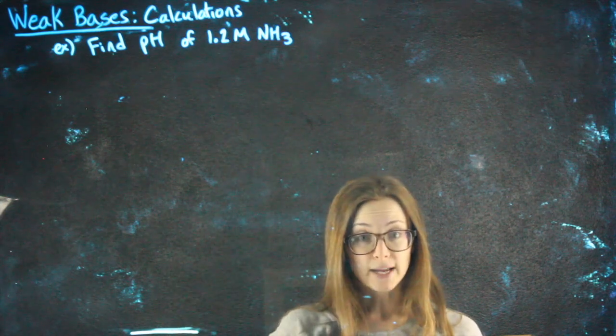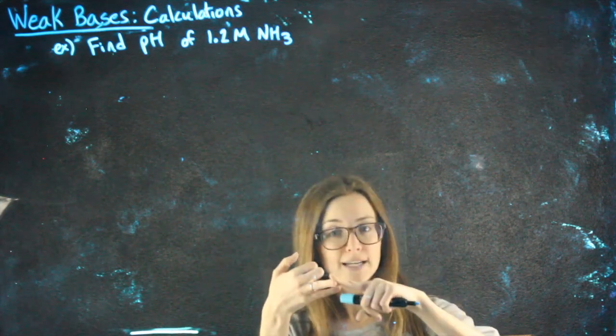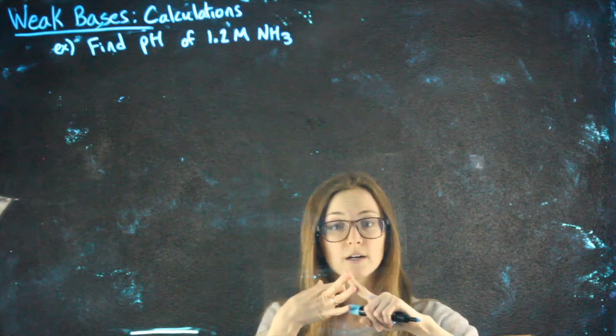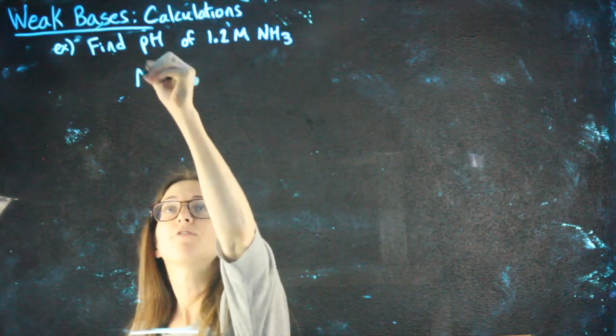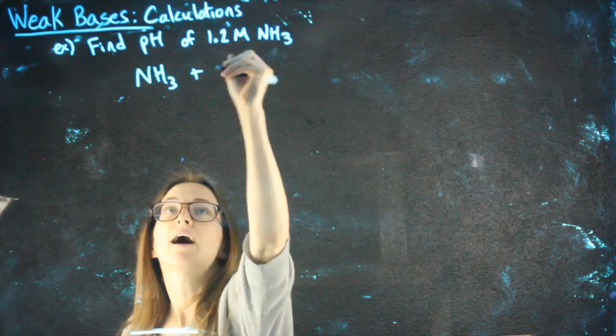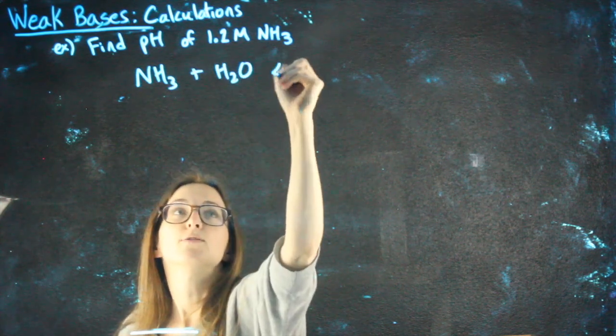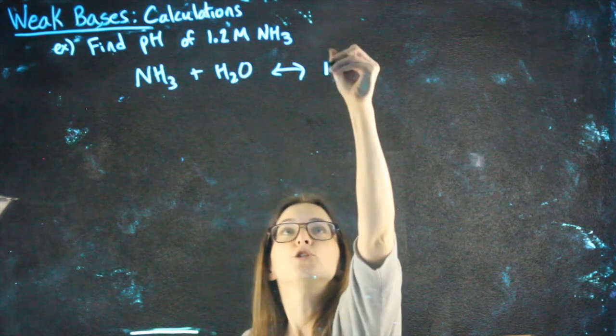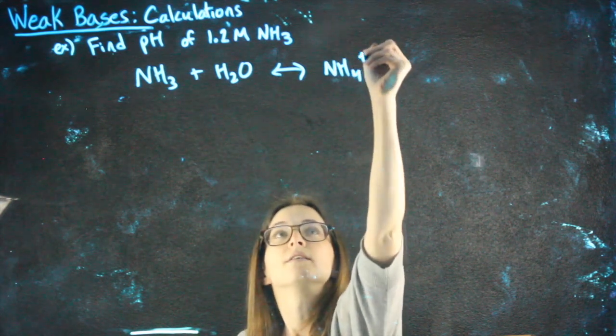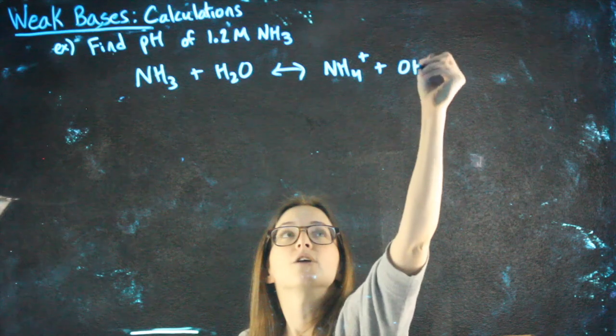Same things we would do with weak acid: dissociate, ICE chart, do our K expression, except this time it'll be KB. So dissociating it, for a weak base, I add water, I use equilibrium arrows, the weak base steals an H+, and releases OH-.